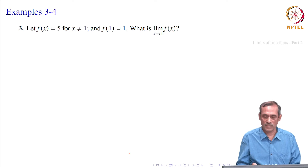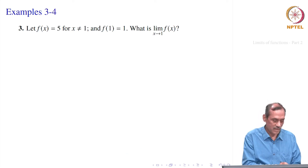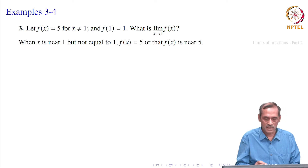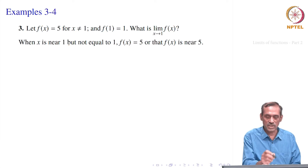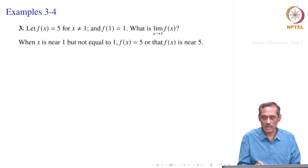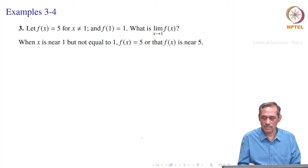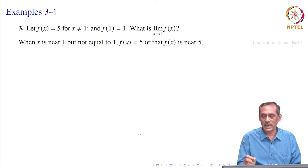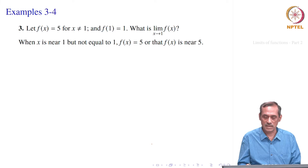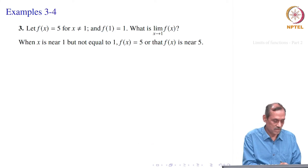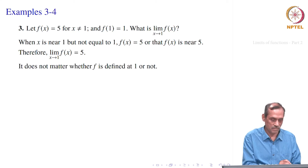What should be the limit of f(x)? Again, if you see the nearness argument, x is near 1 but not equal to 1. So whatever you choose, it will be 5. So f(x) should be near 5 — it is equal to 5 really. That is what we want to show formally, and this is what the limit should come out to.